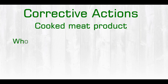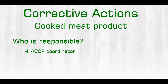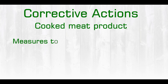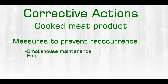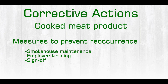The person responsible for implementing the corrective action could be identified as the HACCP coordinator, and then measures to prevent reoccurrence would be to perform smokehouse maintenance. Employees that work with the smokehouse will be trained and they will sign off that they will not remove smokehouse racks until a proper internal temperature is achieved and documented.